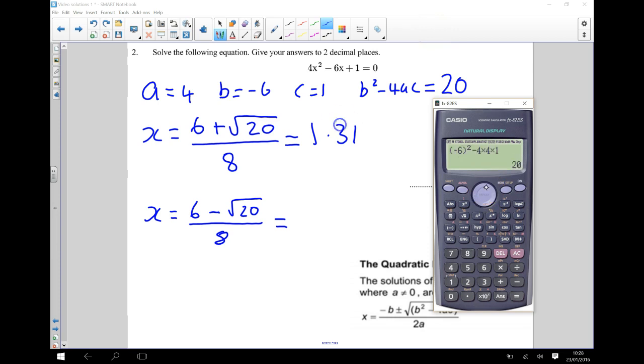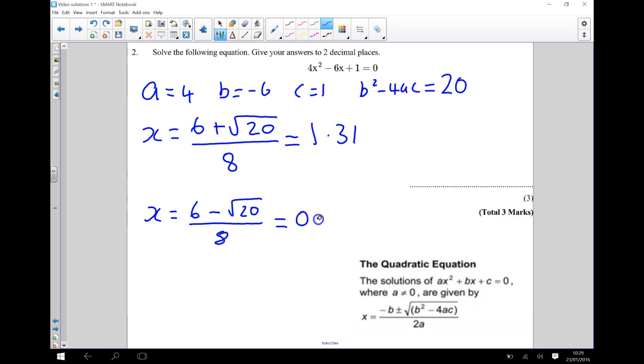Okay and then I'm going to do it again. I'm just going to change that, I'm going to cheat a little bit here and I'm just going to change that to a take away and that gives me 0.19 to 2 decimal places. So I'll write that down 0.19.